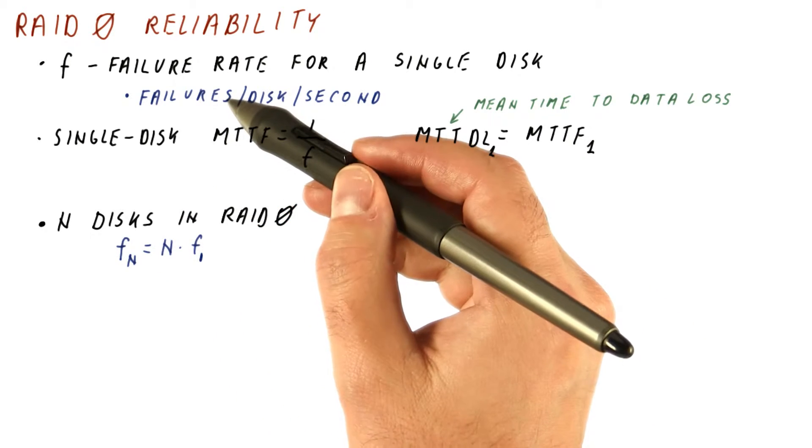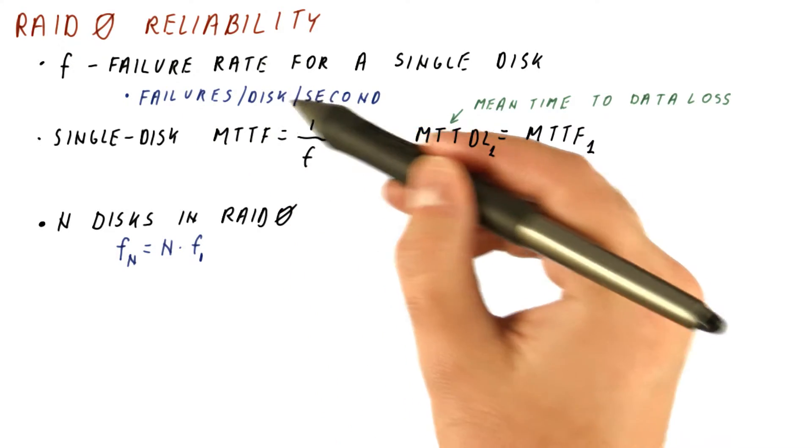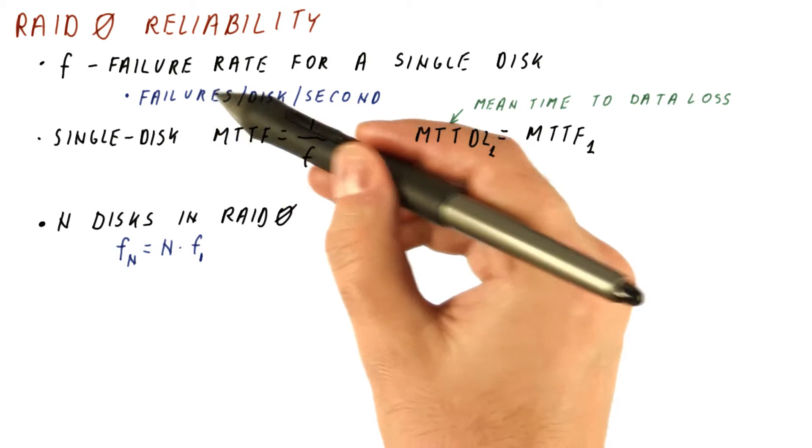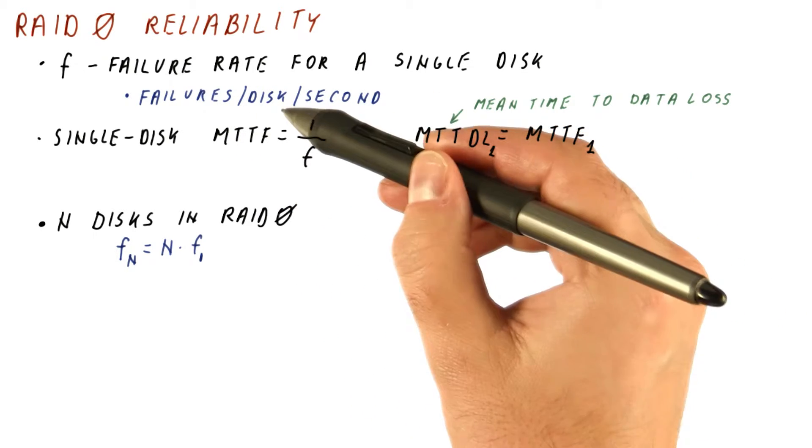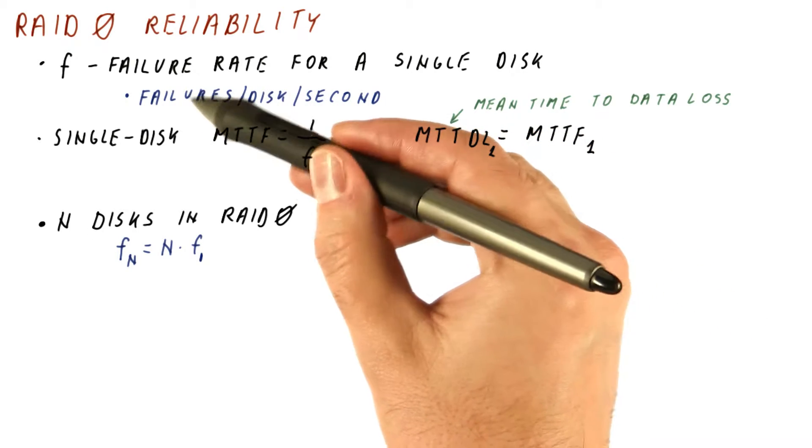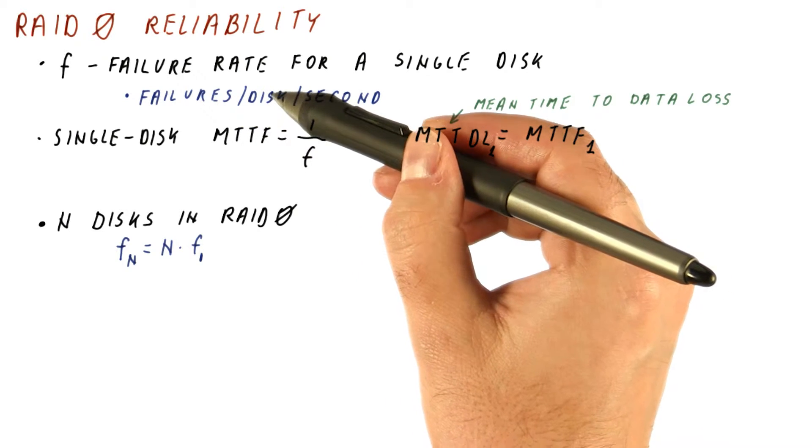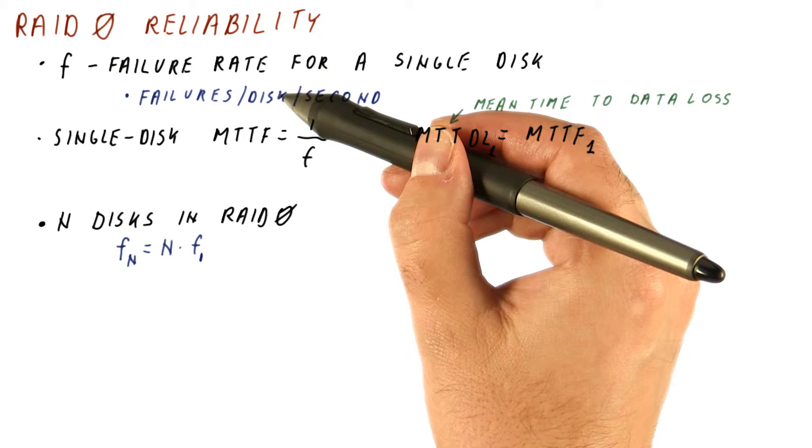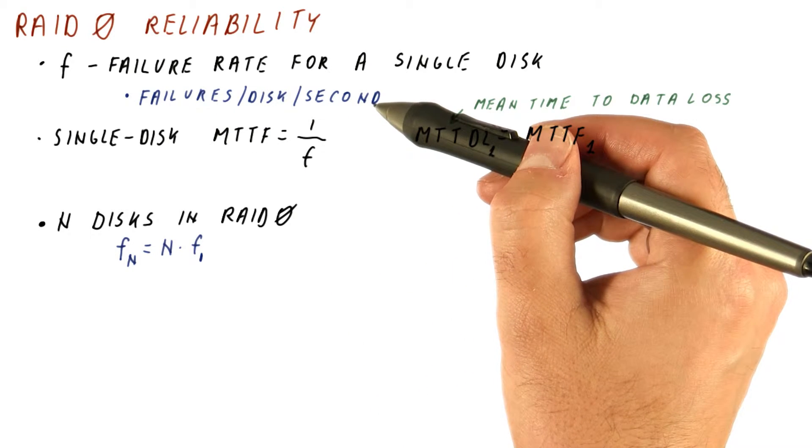This is because, for example, if we can expect 1 millionth of a failure per working disk per second, then we can expect one failure per million working disks per second. So if we start the second with a million working disks, chances are that one of them will fail during the second. If we start the second with half a million working disks, on average half of a single disk will fail per second, and so on.